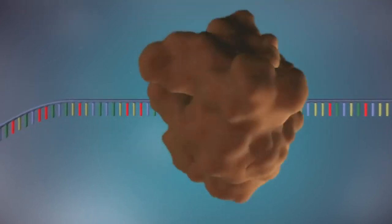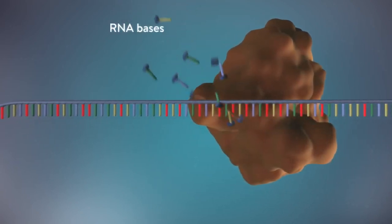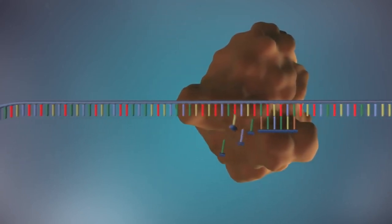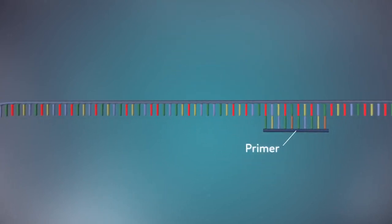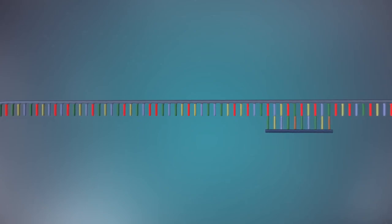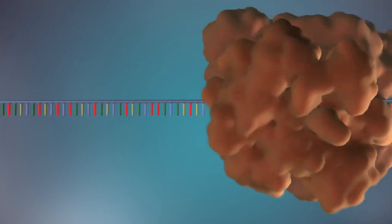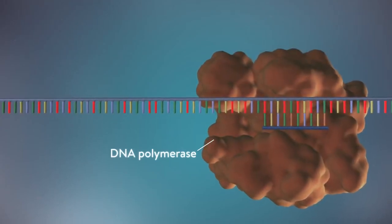An enzyme called primase starts the process. This enzyme makes a small piece of RNA called a primer. This marks the starting point for the construction of the new strand of DNA. An enzyme called DNA polymerase binds to the primer and will make the new strand of DNA.